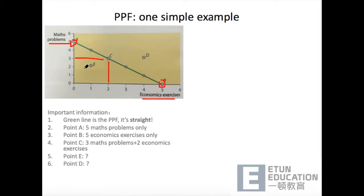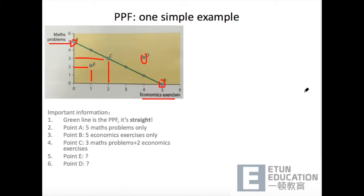Point E is actually inside the frontier. 比如说你本来有一小时应该做题，但是你花了二十分钟去看闲事了，那你只能做两道数学体加上一道经济体了。明显就是没有充分合理利用你的时间，so it's actually an example of inefficient use of resources. And point D is actually outside of the frontier. 视频后可以想一想point D代表的又是什么。